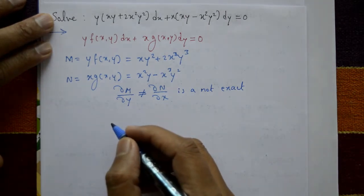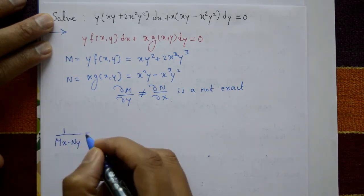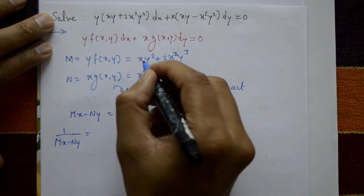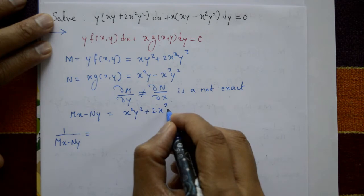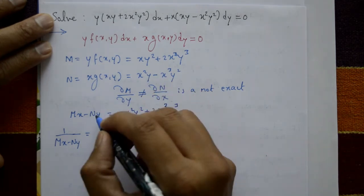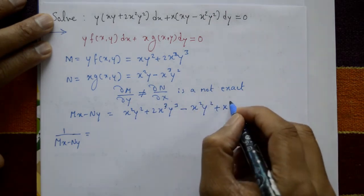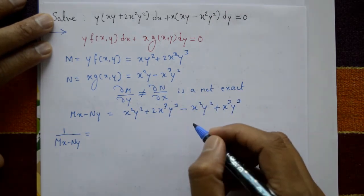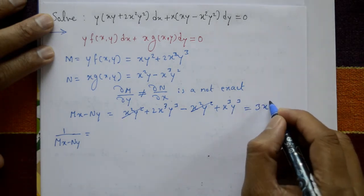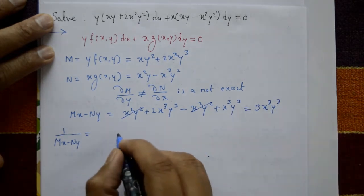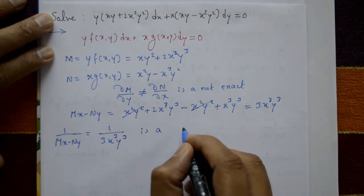Find the integrating factor. The integrating factor is 1/(Mx - Ny). First compute Mx - Ny: M multiplied by x gives x²y² + 2x³y³, minus N multiplied by y gives x²y² - x³y³. After cancellation: 2+1 = 3 times x³y³. So 1/(Mx - Ny) = 1/(3x³y³) is the integrating factor.